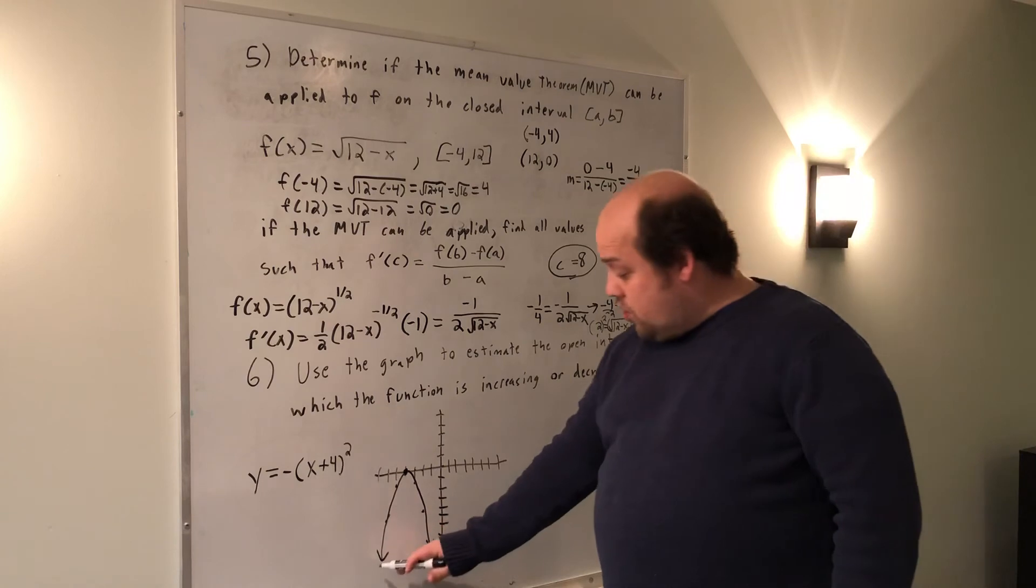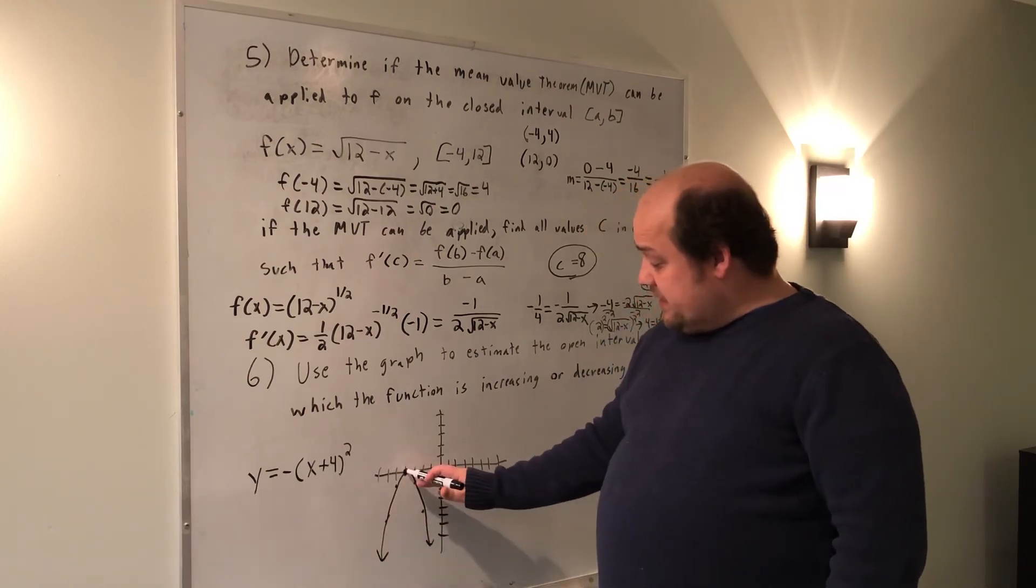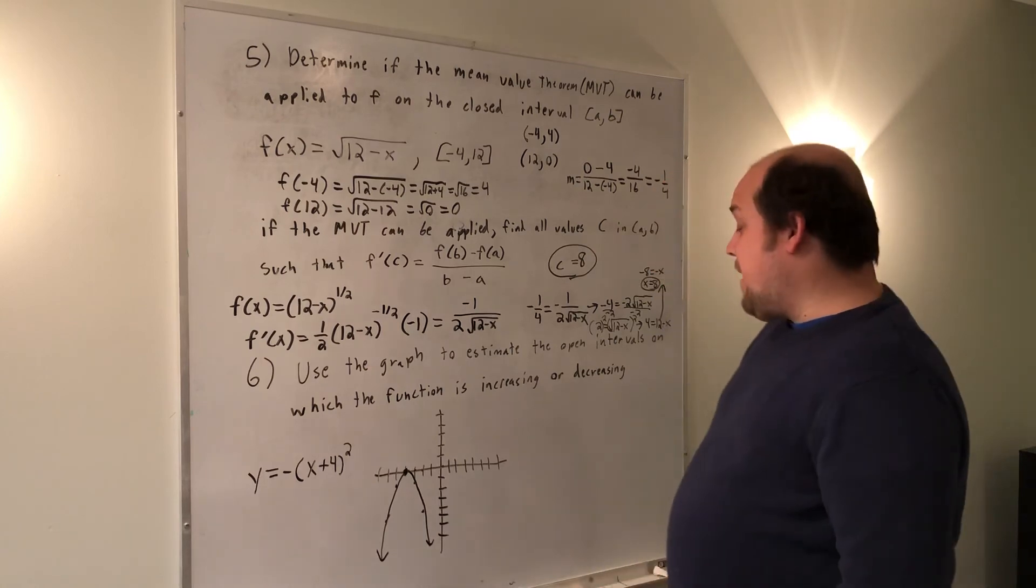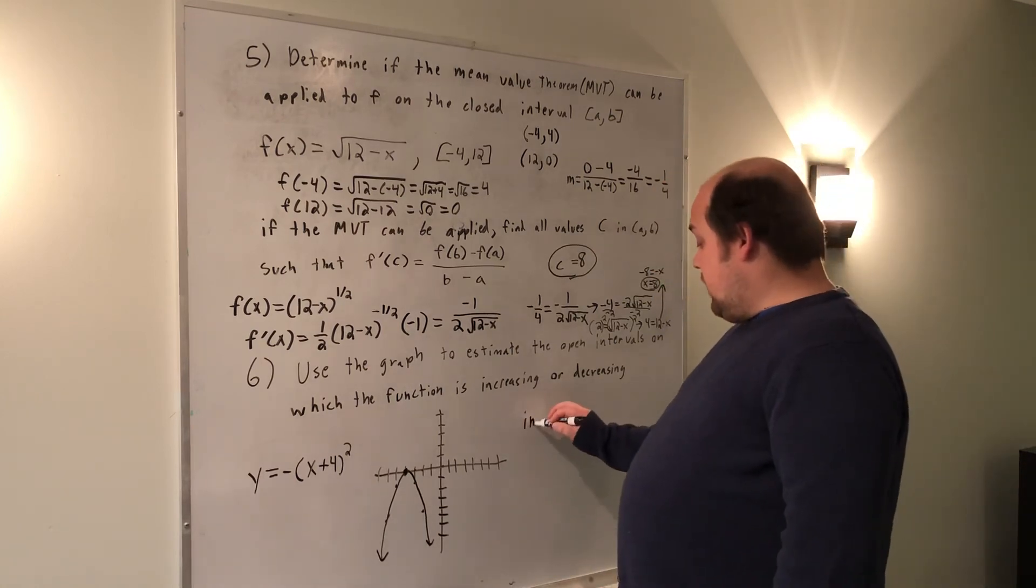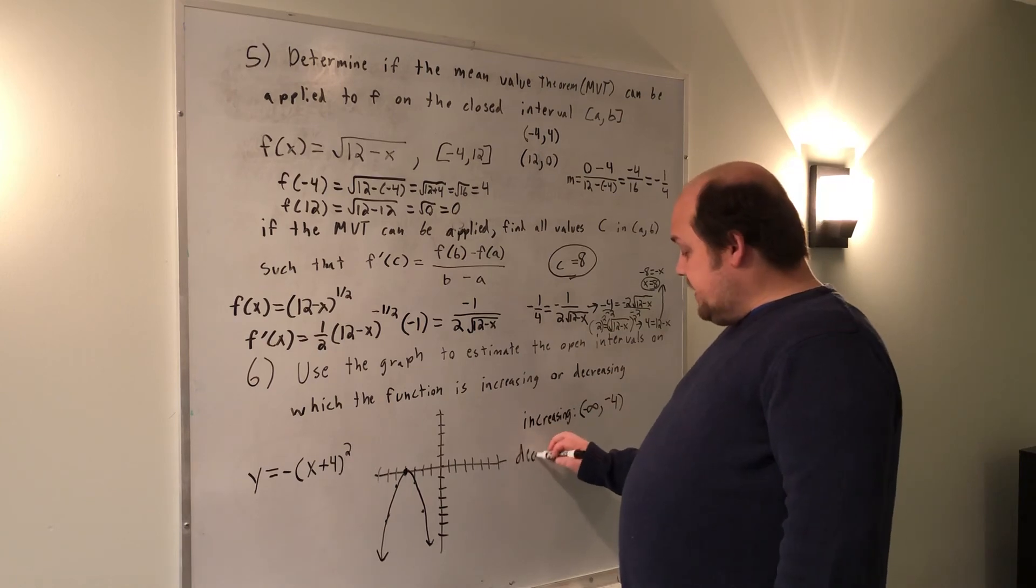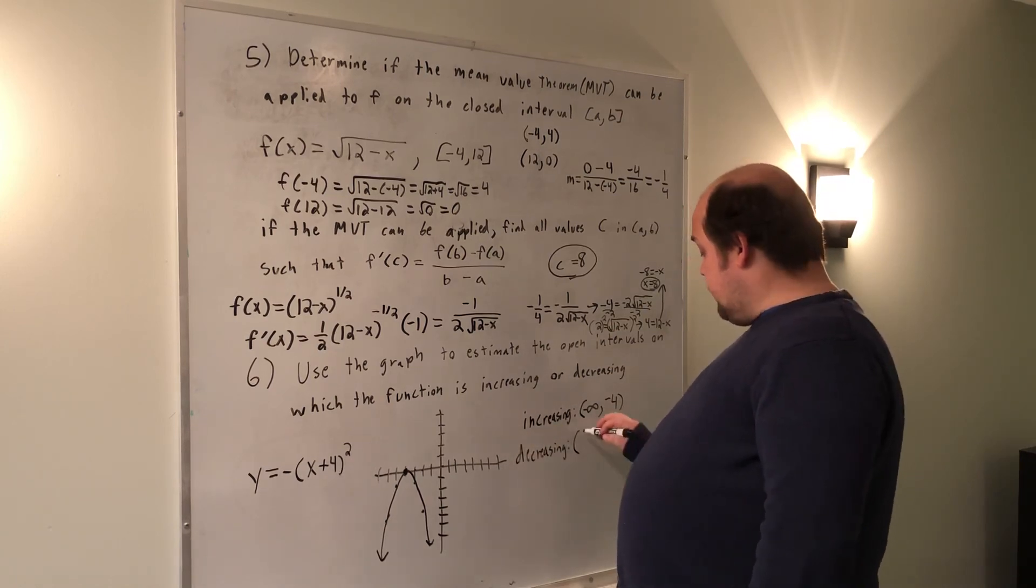So really, we're going up or increasing until we get to negative 4. We're going down or decreasing once we get past negative 4. So increasing starts at negative infinity, goes up to negative 4. Decreasing starts at negative 4, goes on to infinity.